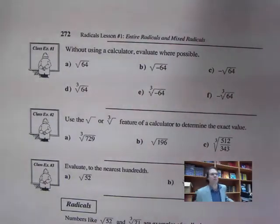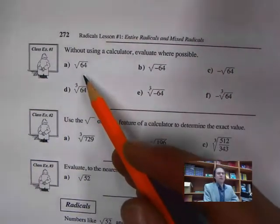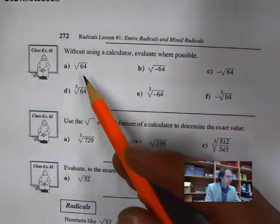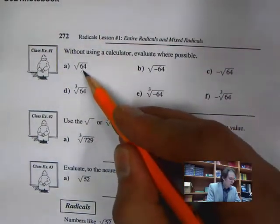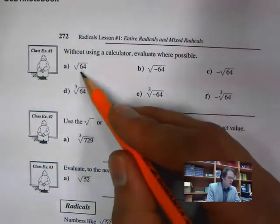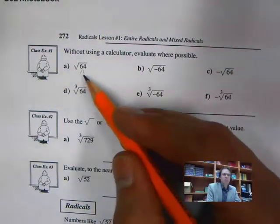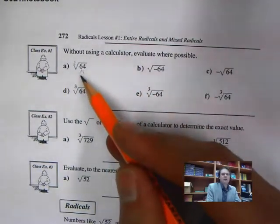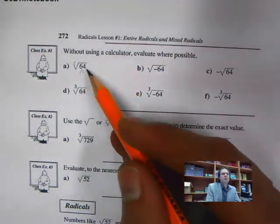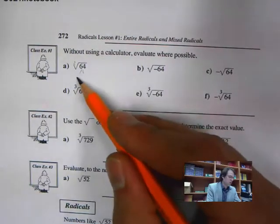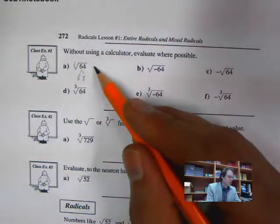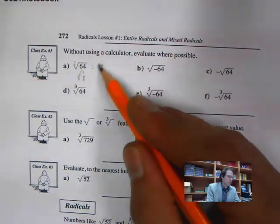Without using a calculator, express each of these. The first one, we want the square root of 64. I like to do factor trees and figure out what pairs multiply together to get 64. If we do that, it's 8 and 8, so the square root of 64 is equal to 8.